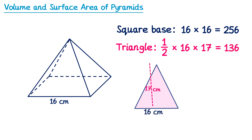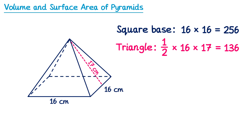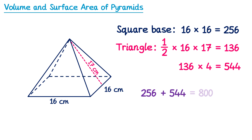So the area of that triangular face is 136. But all four triangular faces are the same size, so we take 136 and multiply it by 4 to get the total area of all four triangular faces, which is 544. We then add the area of the square base, 256, to the area of all four triangles, 544. This gives a total surface area of 800 centimetres squared.